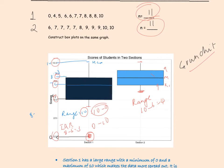The interquartile range, or IQR, is the difference between Q1 and Q3. So the IQR is 8 minus 5, which equals 3. The first section has a large range — from 0 through 10, about 10 points. In addition, we have a left-skewed distribution because of the low outlier of 0, which is far removed from the rest of the data.